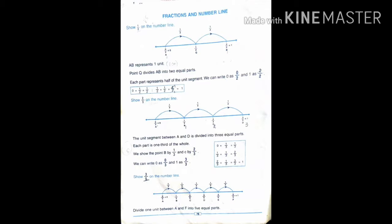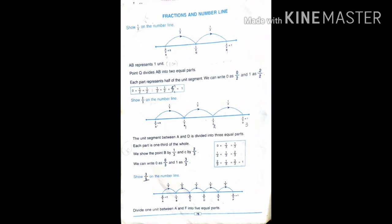First, take your book, page number 78. Let's look at examples. First one: show 1 by 2 on the number line.